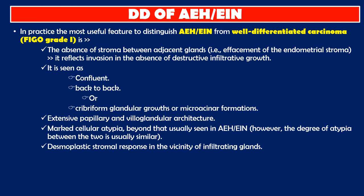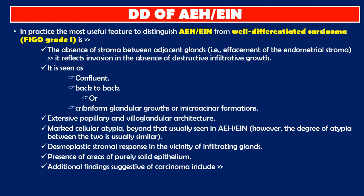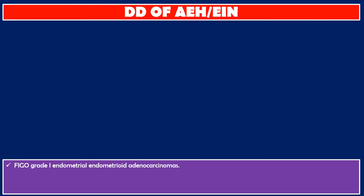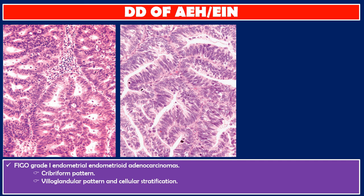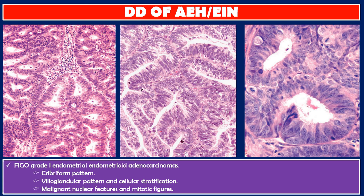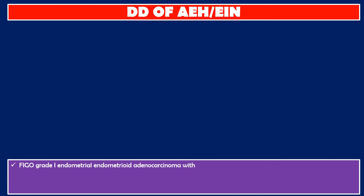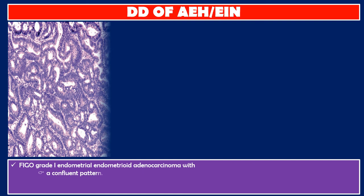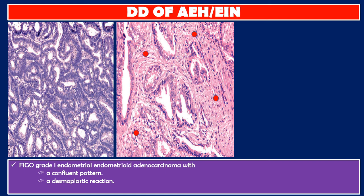Additional features of carcinoma include desmoplastic stromal response in the vicinity of infiltrating glands, presence of areas of purely solid epithelium, necrosis, and foamy macrophages. FIGO Grade 1 endometrial endometrioid adenocarcinoma can show a cribriform pattern, villoglandular pattern, cellular stratification, malignant nuclear features, mitotic figures, confluent pattern, desmoplastic reaction, and microglandular pattern (microacinar formations).